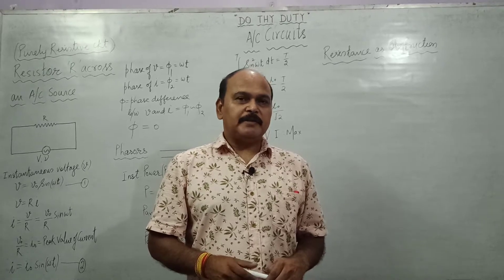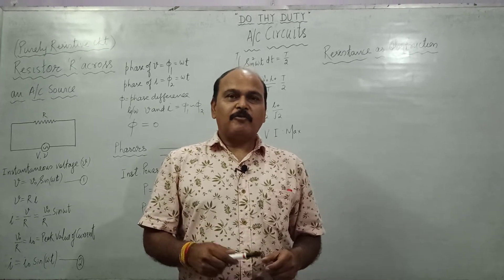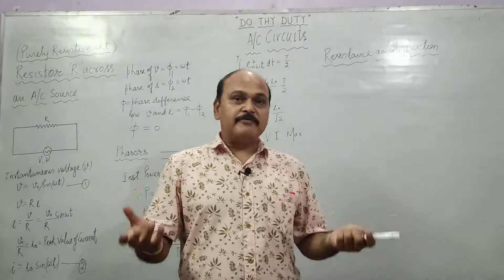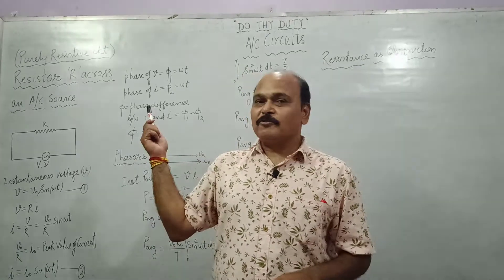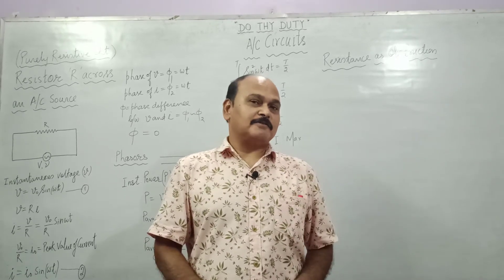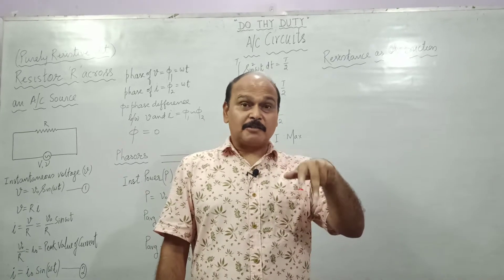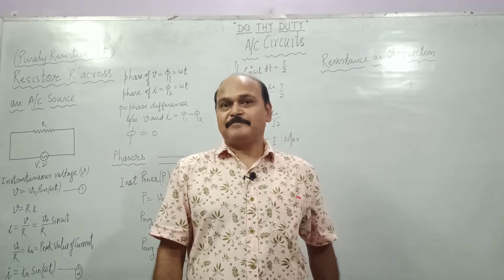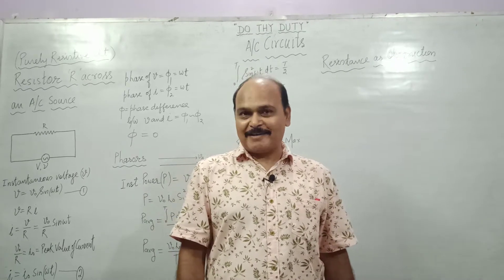Dear children, we have been studying AC circuits. In AC circuits we have studied what is AC current, alternating current, what is alternating voltage, what are their mean values, what are their RMS values. Right now we are going to work out the behavior of three different devices across an alternating source. These three devices are resistance, capacitor, and inductor. Let's begin with the behavior of a resistor across an alternating source.